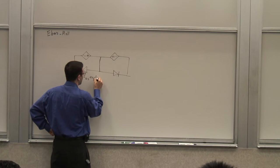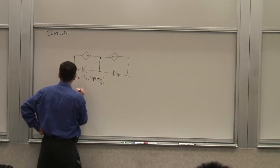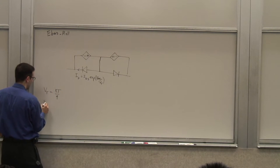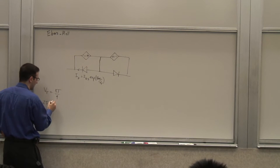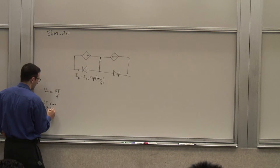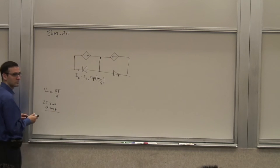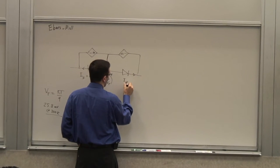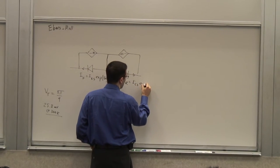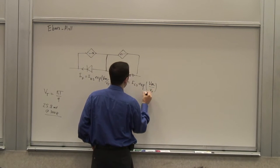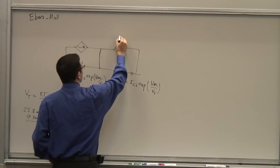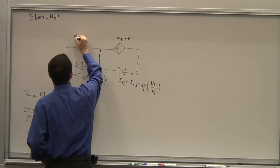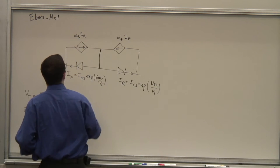IES times e^(VBE/VT), where VT = kT/q, which was approximately 25.8 millivolts at 300 Kelvin. And there was the reverse current IR = ICS times e^(VBC/VT). These two dependent currents were alpha_F times IF and alpha_R times IR — the forward and reverse alphas.